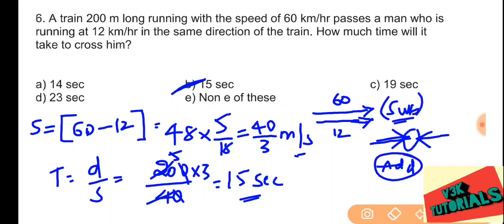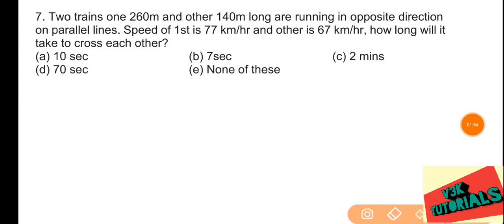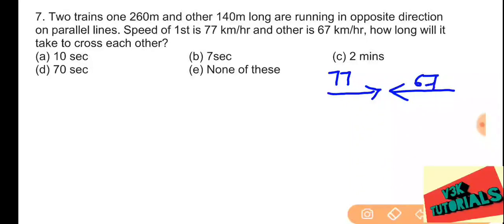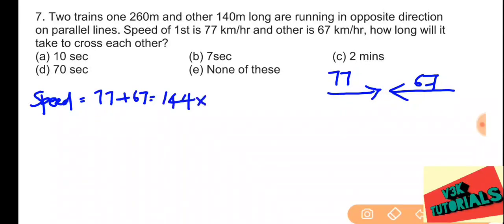Problem number seven: two trains, one 260 meters and the other 140 meters long, are running in opposite directions on parallel lines. Speed of the first is 77 kilometers per hour and the other is 67 kilometers per hour. Since they are in opposite directions, we add the speeds: 77 plus 67 equals 144 kilometers per hour. Converting to meters per second by multiplying with 5 by 18 gives 40 meters per second.